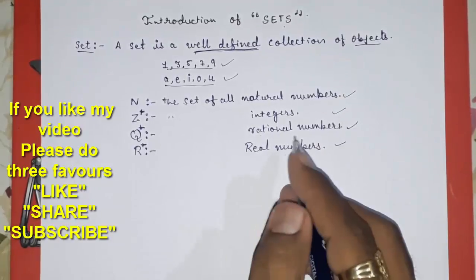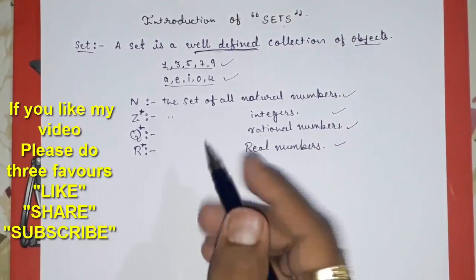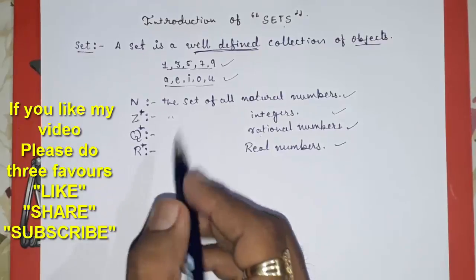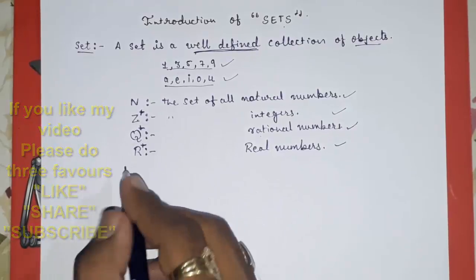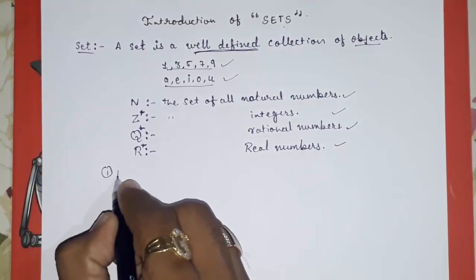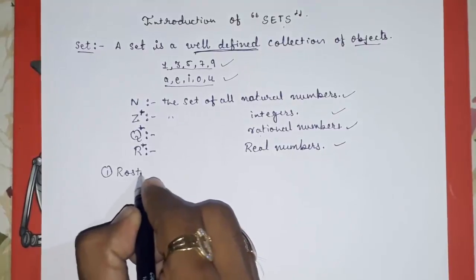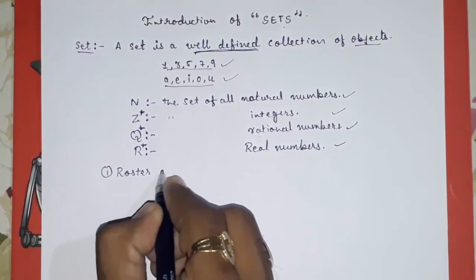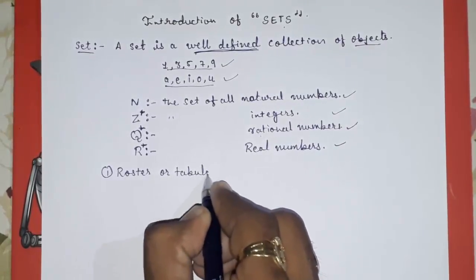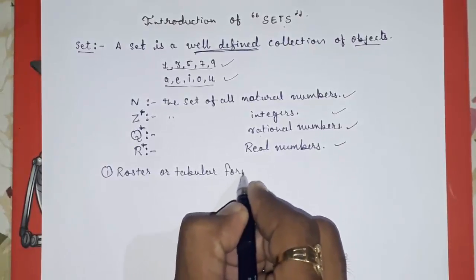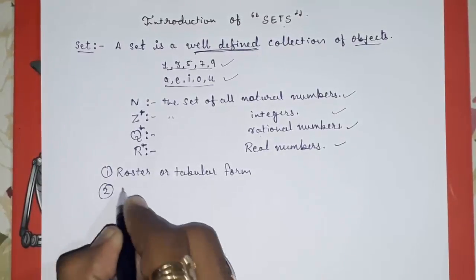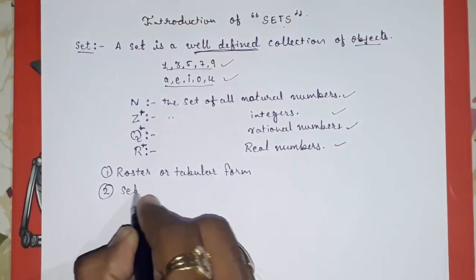Now there are two methods of representing sets. Number one is the Roster or Tabular form, and number two is the Set Builder form.